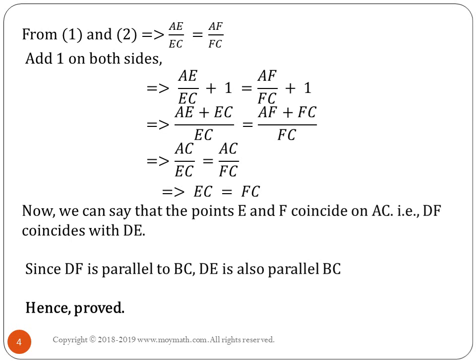If you add AE by EC plus one on both sides and solve those values algebraically, AE plus EC, if you check in the picture, AE plus EC is AC, and AF plus FC as per construction is also AC. Now both numerators are AC, so if we cancel AC on both sides, we get EC equal to FC.